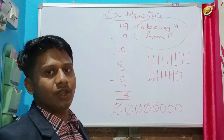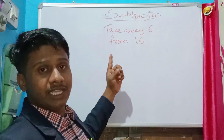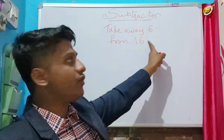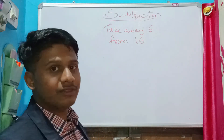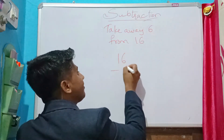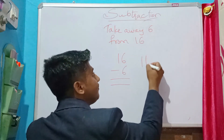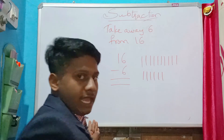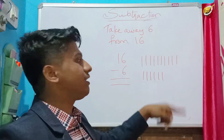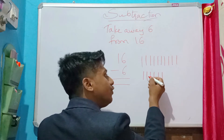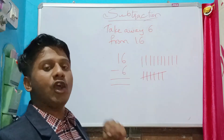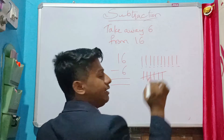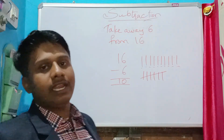The next question is: take away 6 from 16. So we consider 16 minus 6. Draw 16 lines. Out of these I have to remove six: one, two, three, four, five, six — I'll cancel them. Remaining lines: one, two, three, four, five, six, seven, eight, nine, ten. The answer is 10.